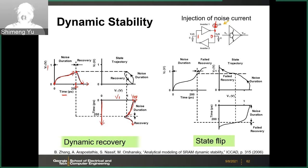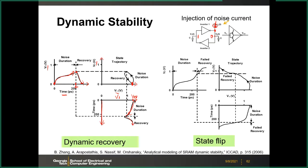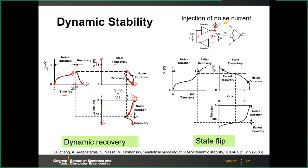This recovery is because of the positive feedback in the cross-coupled inverter. If you trace the trajectory of v1 and v2 in the butterfly curve, you will have a dynamic trace of the voltage. Initially you start where v1 is one and v2 is zero, and during noise injection this point moves along the trajectory; once the noise is removed, the point goes back to the original state.